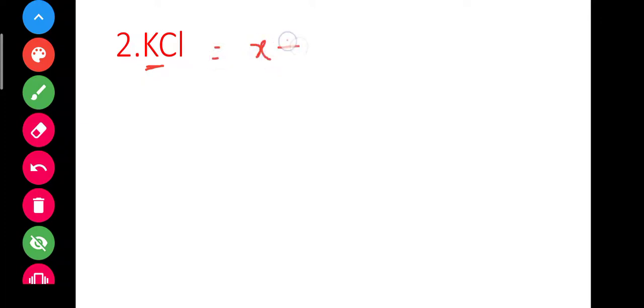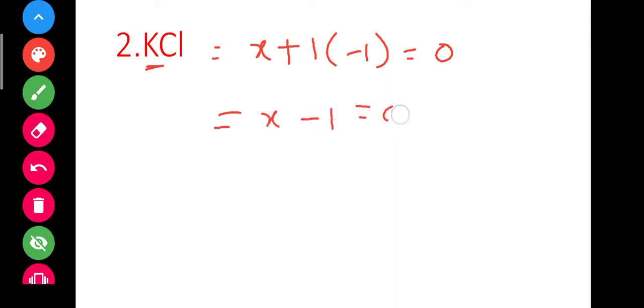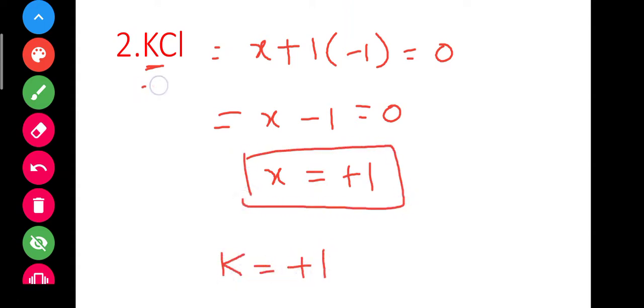Next: KCl. Potassium is a group 1 alkali metal, so its oxidation state is plus 1. Chlorine is minus 1. So x plus 1 into minus 1 equals 0, giving x equals plus 1. The oxidation state of potassium in KCl is plus 1.